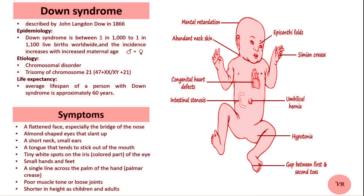While there is no cure for Down syndrome, early intervention through therapies like speech, physical, and occupational therapy can help individuals develop their skills and reach their full potential. With support, many people with Down syndrome lead fulfilling lives, attending school, holding jobs, and being part of their community. Advances in healthcare and education have significantly improved life expectancy and quality of life, with many living into their 60s or beyond.